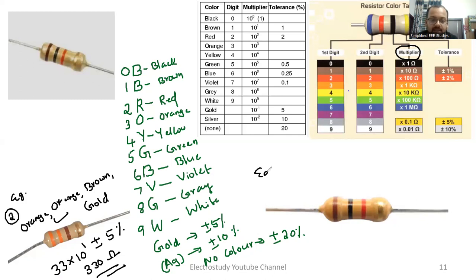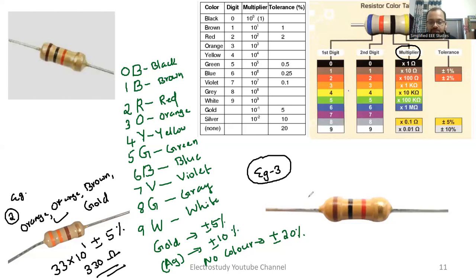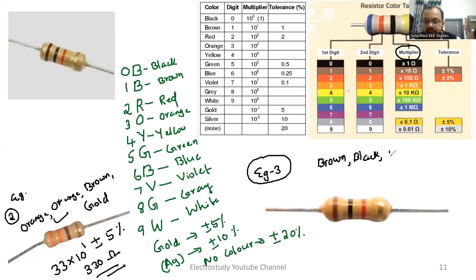Let us see the last example — Example 3. If I complete this third example I'm sure that you can identify the value of 4-band resistance by using the color code technique. For 5-band I will discuss in another video. Note down the colors: brown, then black, then red color.